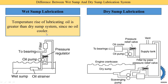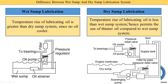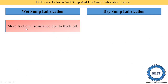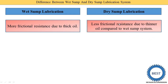The next difference is temperature. The temperature rise of lubricating oil is greater in the wet sump system since no oil cooler is used — meaning the oil temperature is not reduced, so it is higher than in the dry sump system. In a dry sump lubrication system, the oil cooler is used so temperature rise is less, which permits the use of thinner oil compared to the wet sump system.